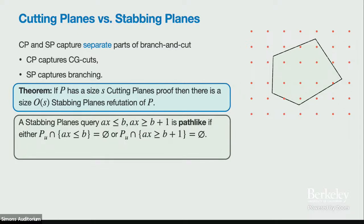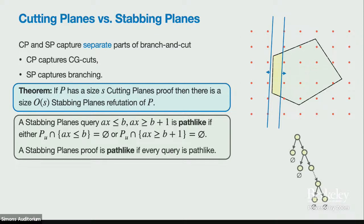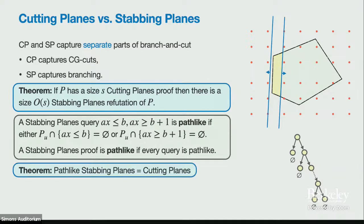To prove this, I'll introduce a weaker notion of stabbing planes equal to cutting planes. A stabbing planes query is path-like if one of the two sub-polytopes resulting from the query is the empty polytope. A path-like stabbing planes proof is one where every query is path-like, so the proof looks like one long path because one side is always empty.